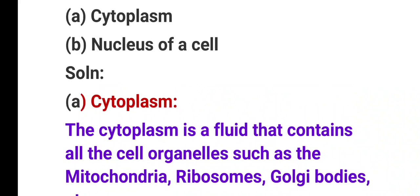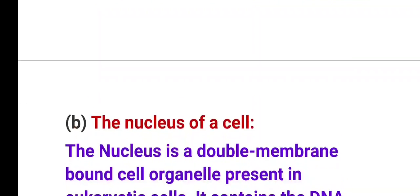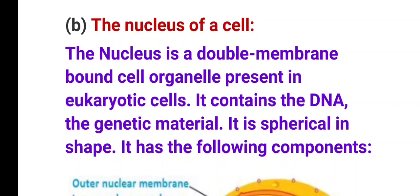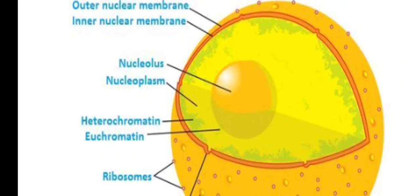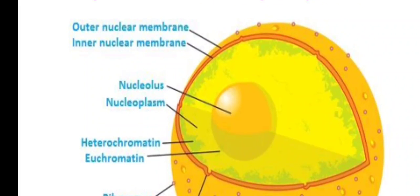B — Nucleus of a cell: The nucleus is a double membrane-bound cell organelle present in eukaryotic cells. It contains the DNA — the genetic material — which passes on genetic characteristics to future generations. It is spherical in shape.